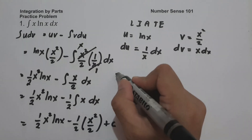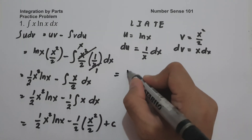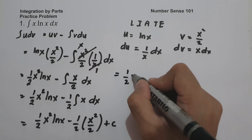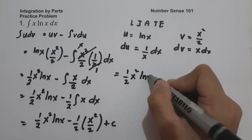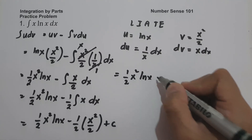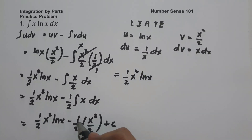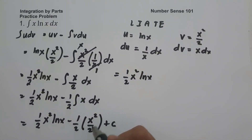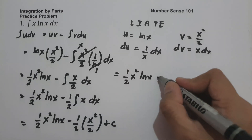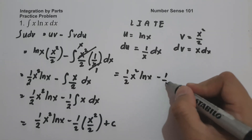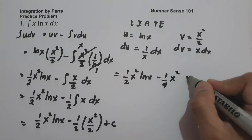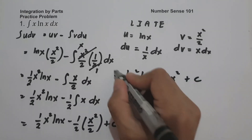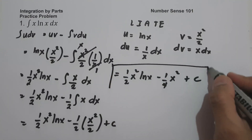Writing the final answer: (1/2)x²·ln(x) minus (1/2)·(x²/2) gives (1/2)x²·ln(x) minus (1/4)x², plus C. This is our answer for example 1.